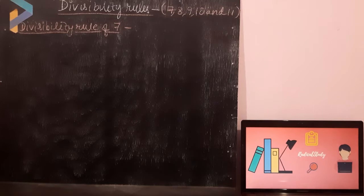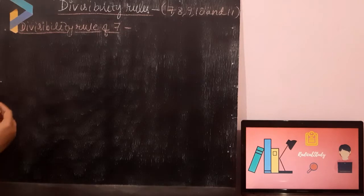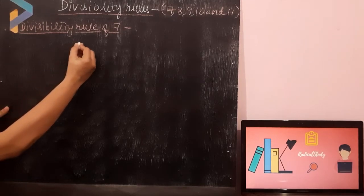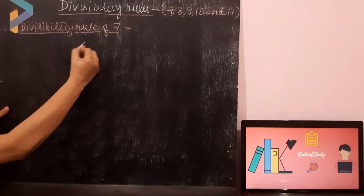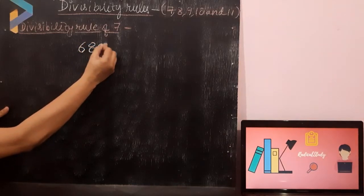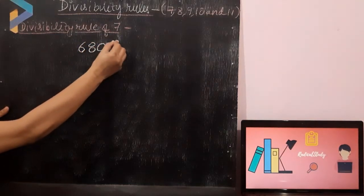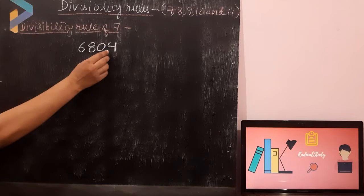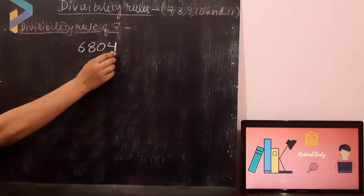How will you test the divisibility of any number by 7? I am going to explain that by an example first, and then I will read the rule. Can you see this number? 6804. How will you identify that this number is divisible by 7 or not?